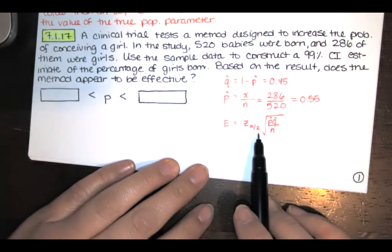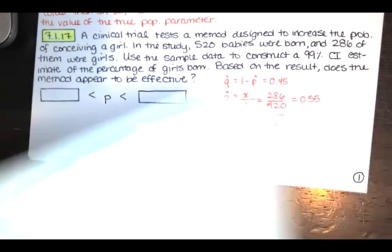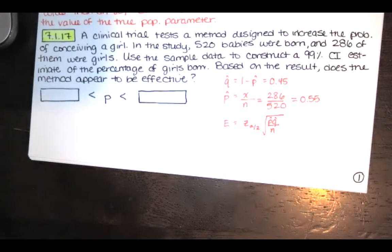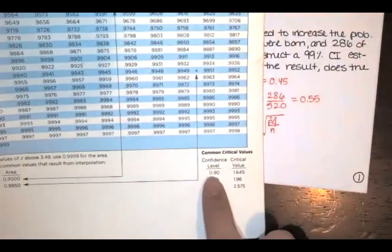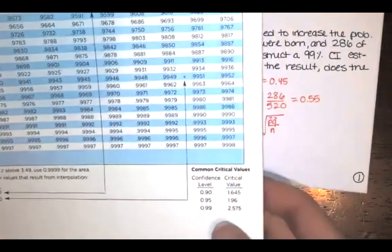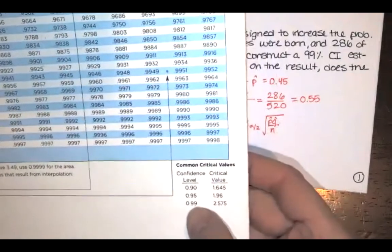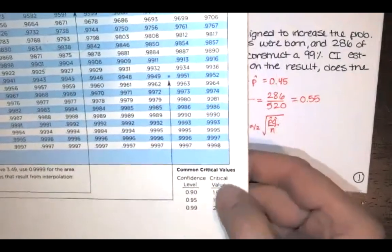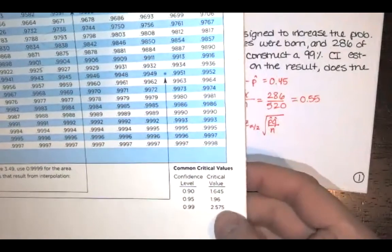And to find this Z sub alpha over 2, I'm going to go to my Z scores table. And notice that you've got common confidence levels and critical values over here. I want a confidence level of 99%, so 0.99. So the critical value associated with that is Z equals 2.575.